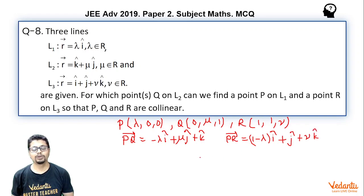Now for PR vector and PQ vector to be collinear, the ratios of their i cap components, j cap components and k cap components should be equal. That means minus lambda by 1 minus lambda should be equal to mu by 1, should be equal to 1 by nu.